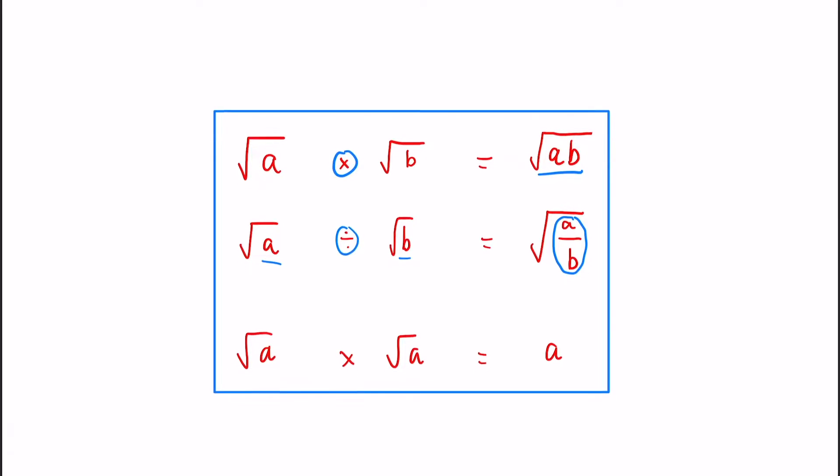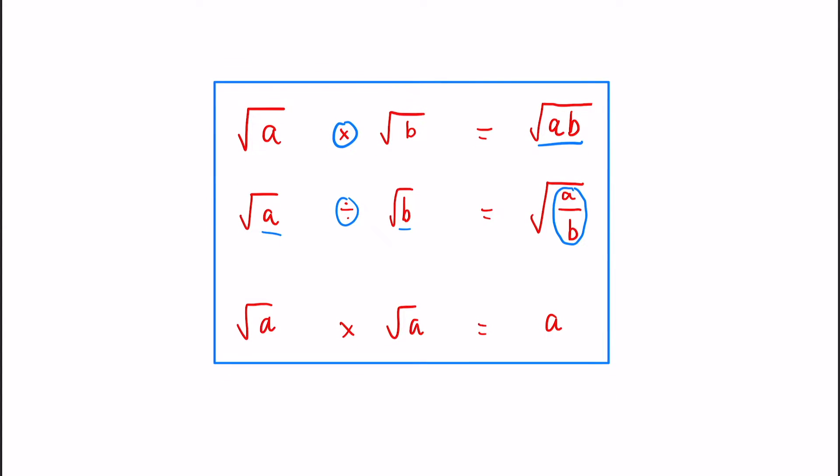And if we're multiplying together two of the same number, then the square root actually just gets eliminated.